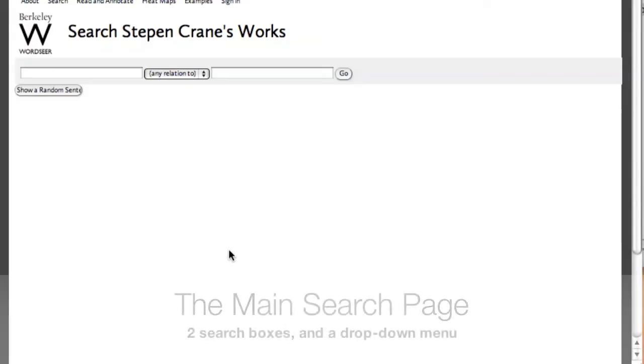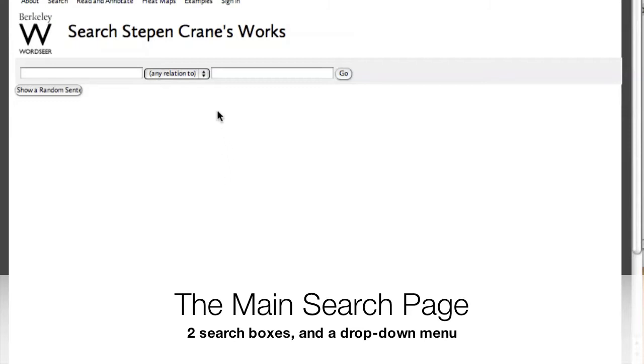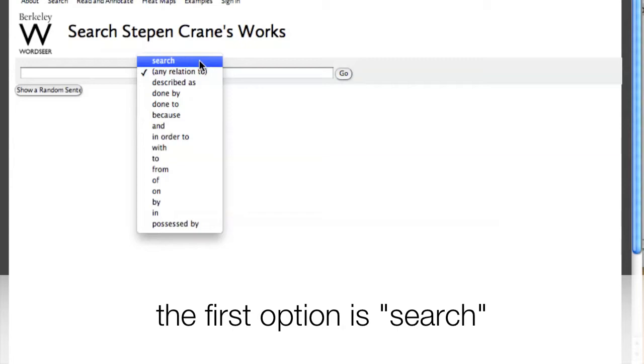Let's see your text analysis environment, part one, search. The main search page contains two search boxes and a drop-down menu. There are many options, but the first option is search.